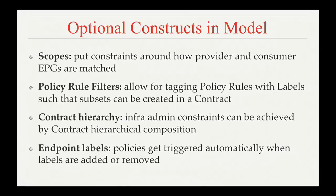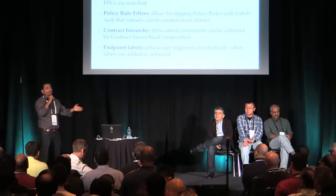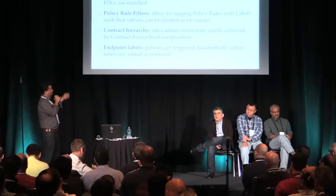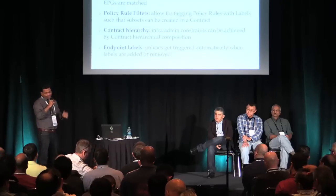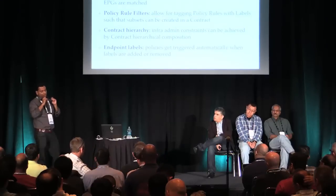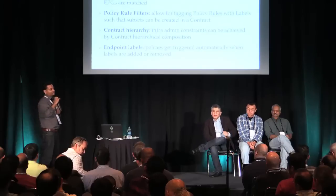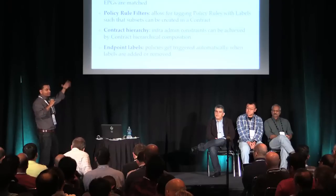We have a notion of contract hierarchy to support the separation of concerns Mohamed described. If the infrastructure person wants to introduce a firewall or IDS into a communication already happening between two tiers, the contract hierarchy enables that. There is also a notion of labels: you assign labels to endpoints or endpoint groups, and policies defined in the contract automatically get triggered for those labels — you don't have to orchestrate the changes manually.